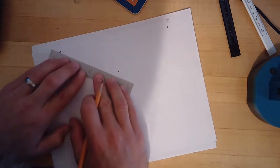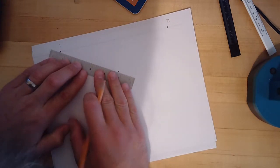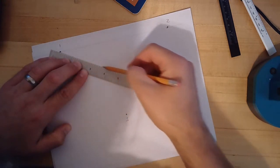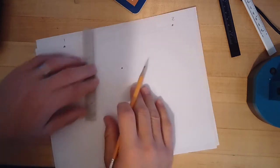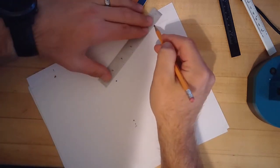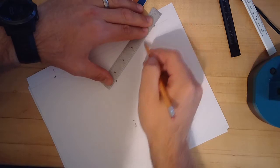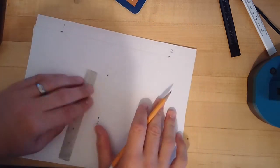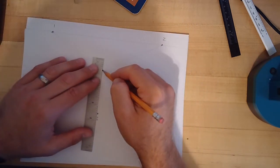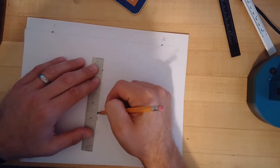So it doesn't matter the order. I'm going to start here and draw a very light width line, a very light depth line, and then my height line coming down to the vanishing point three.